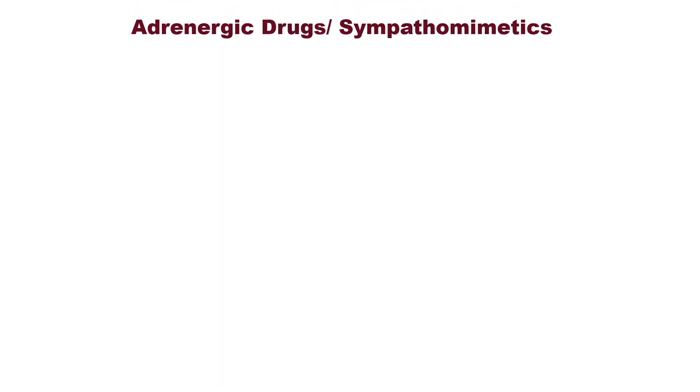Adrenergic drugs, or sympathomimetics, are the agents which increase the activity of the adrenergic nervous system. In the case of the adrenergic nervous system, utilization of energy is more, hence the body needs more energy. Remember the word 'energy' — when you see the word energy, just think about how to increase body energy.